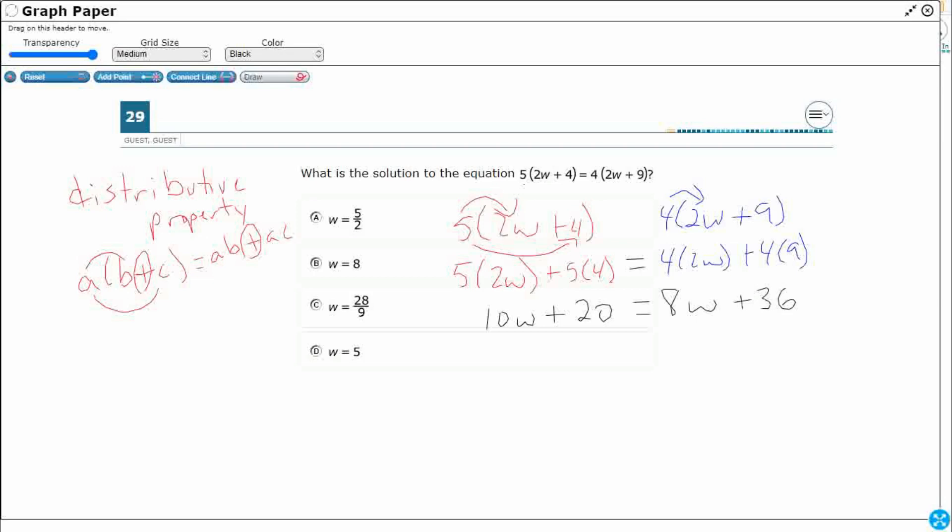Now I could just use my properties of equality to bring everything together. I could move the W to either side. But this is what you always want to look at. You always want to keep the W positive. At the end, if it's a negative, you're going to have to end up multiplying by negative 1 anyways to get it back to a positive. You always want the number you're looking for, the quantity you're looking for, to be positive, right?